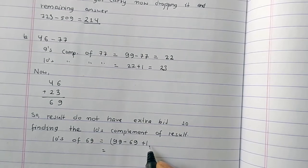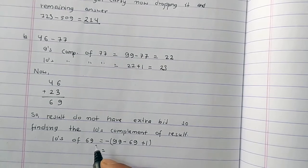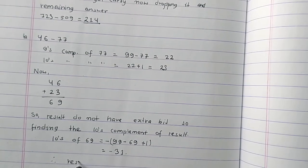This equals 30 plus 1 equals 31. So the result is minus 31.